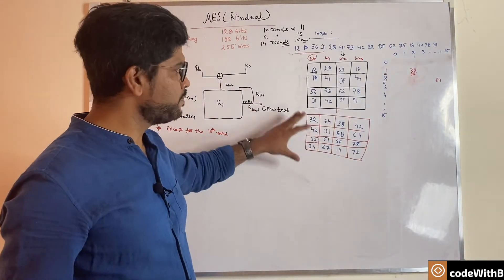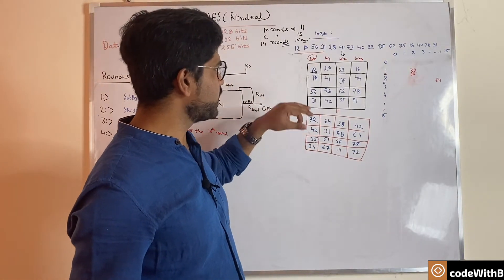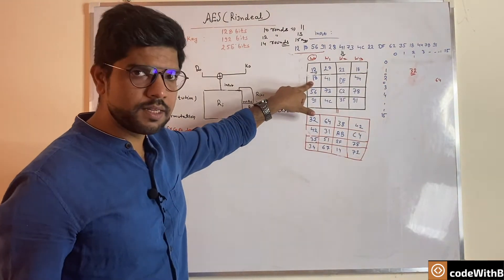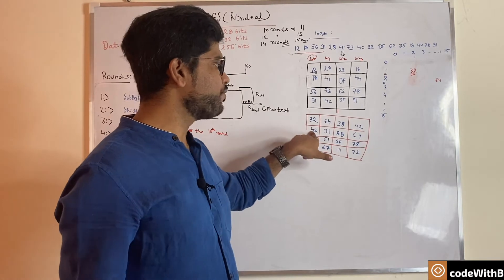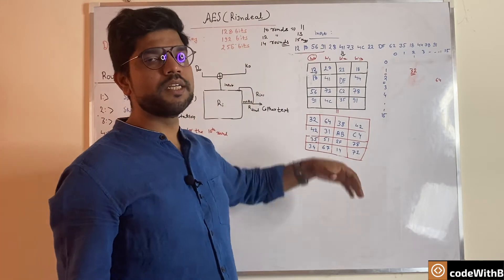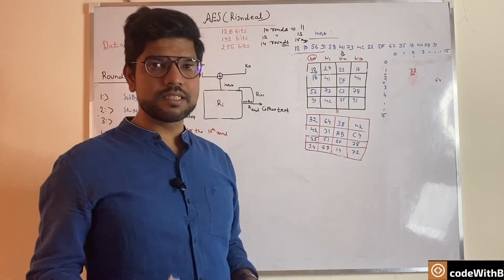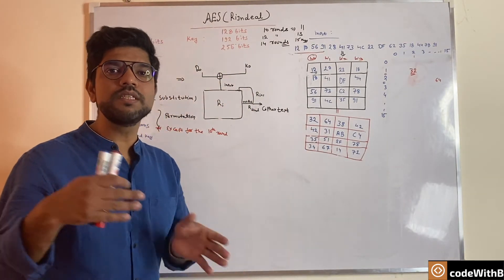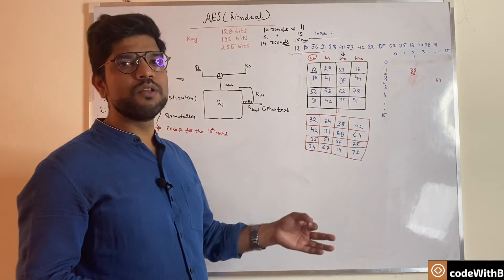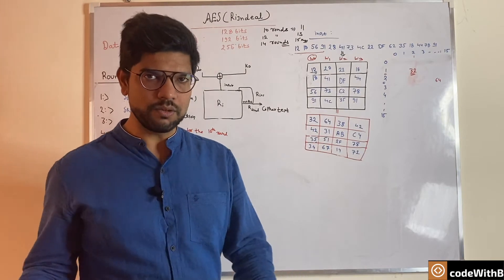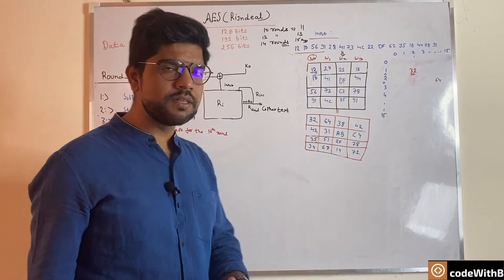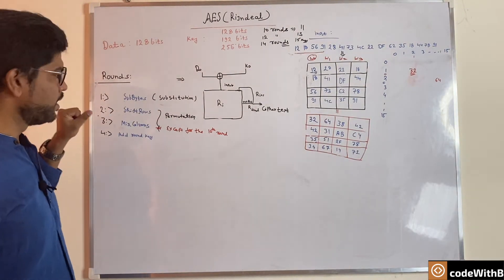After substitution, notice that '18' is replaced by 42 here, and wherever '18' appears elsewhere it is also replaced by 42. So the same input always maps to the same output. We need to add diffusion so that the same value converts to a different value in context, making the cipher less predictable. For adding diffusion we have shift rows and mix columns.